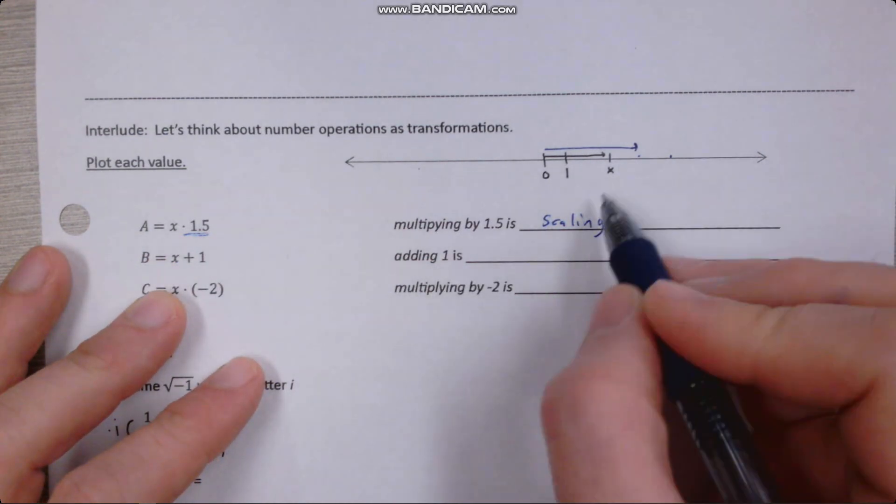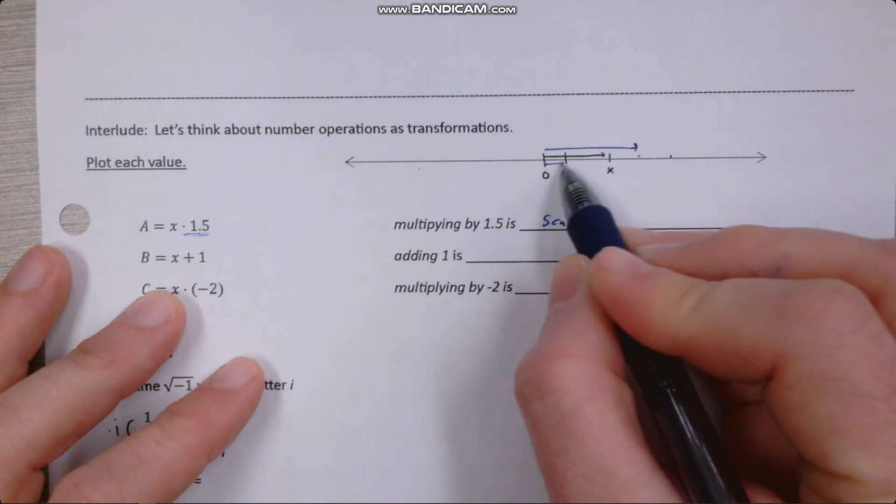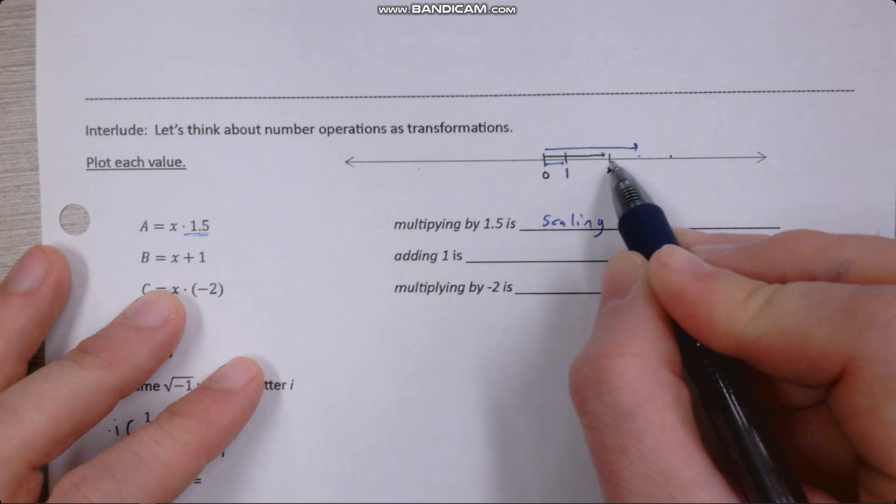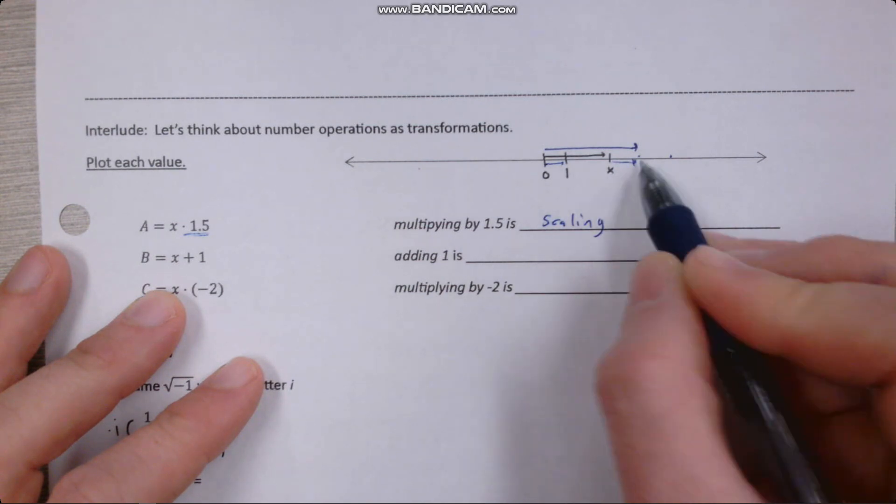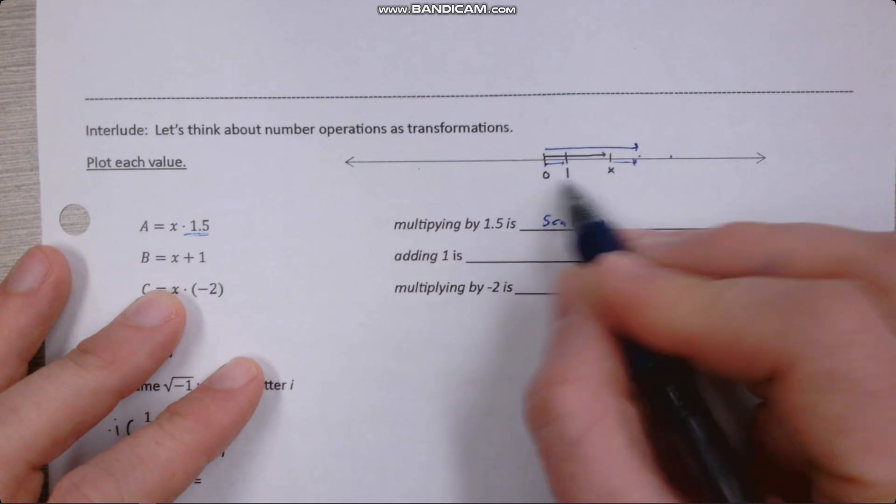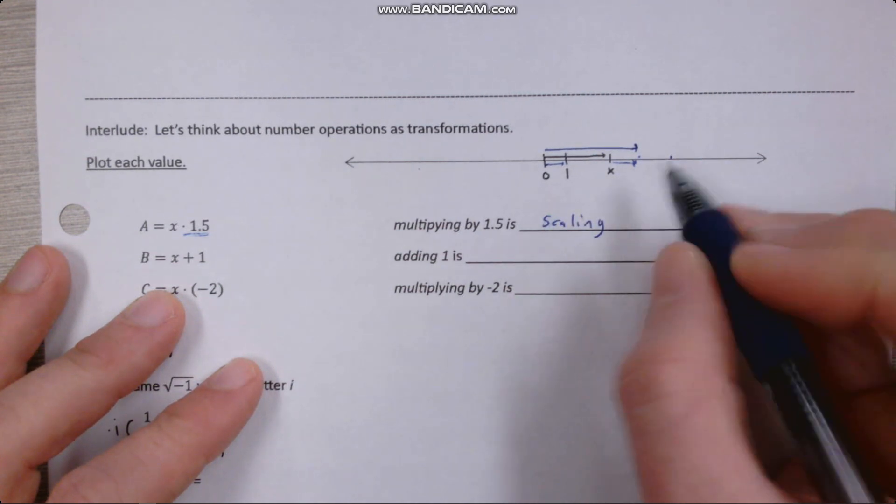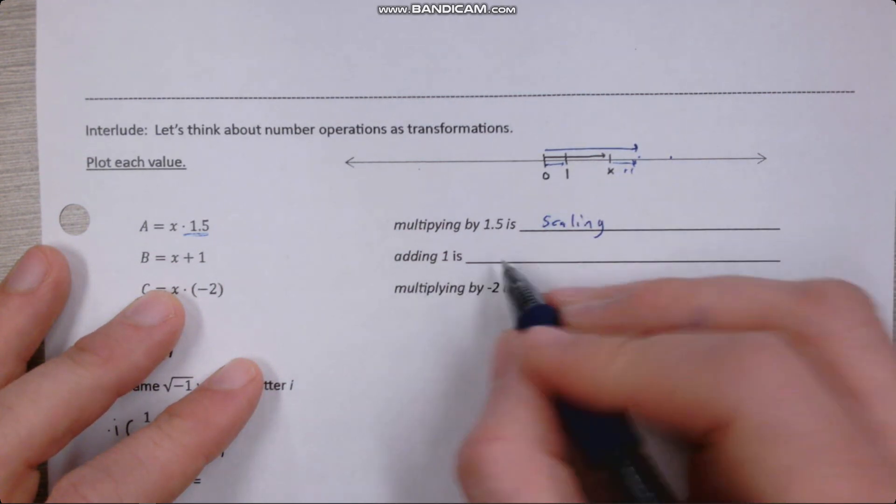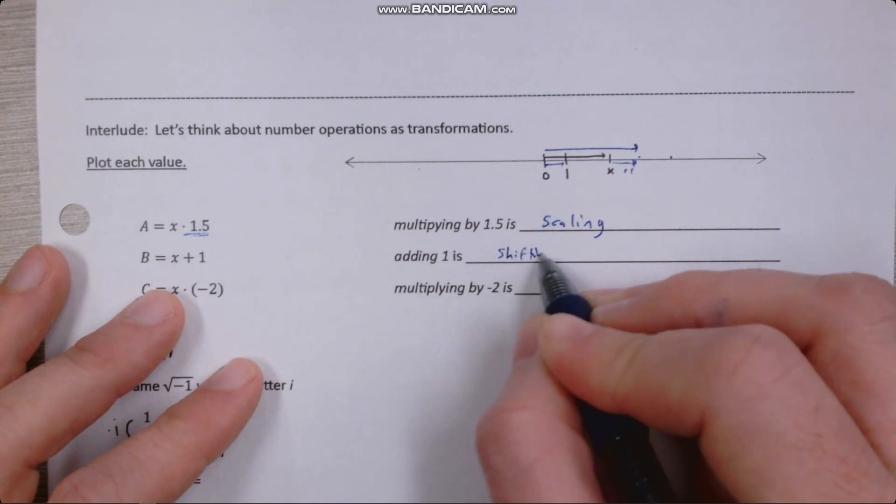Adding. What if we add one? So we would just take this same distance and append it to the end here, and actually it looks like it's about the same place based on where I drew x. So adding one would be something like shifting, or translating.